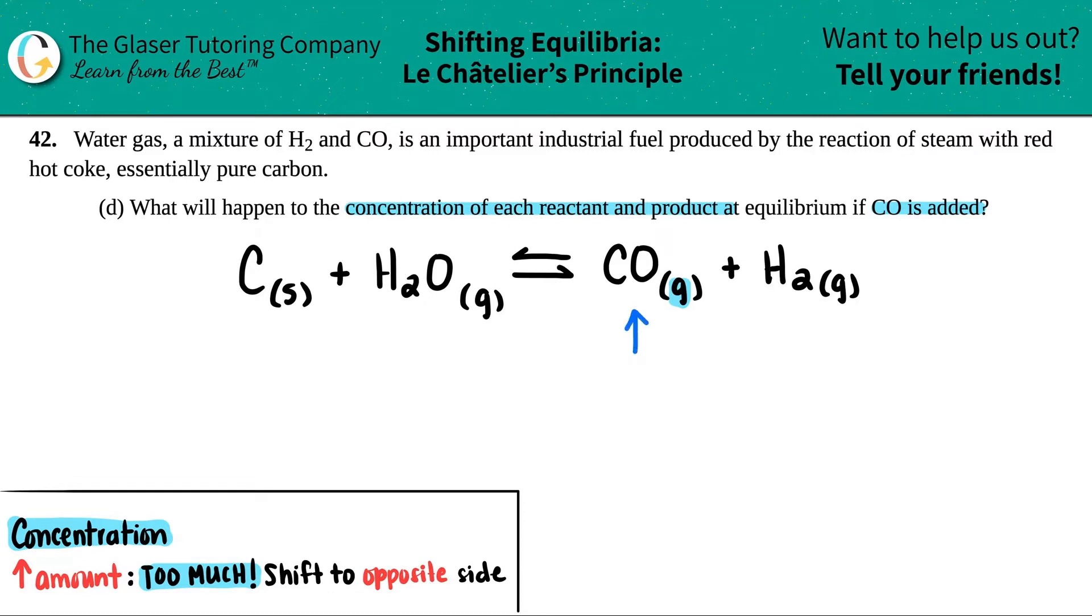Now here's all the information that we need to know for Le Chatelier's principle: If you increase the amount of something, you have way too much, right? You went over the equilibrium amount. So what do you want to do? You need to counteract this. You don't want too much, you want to drop it down.